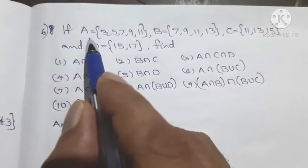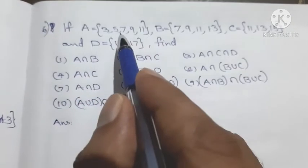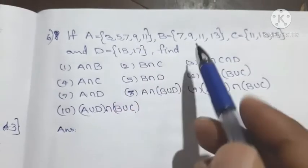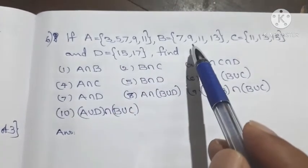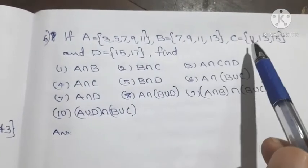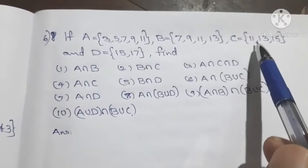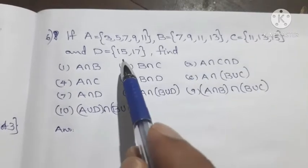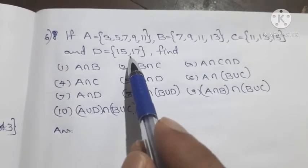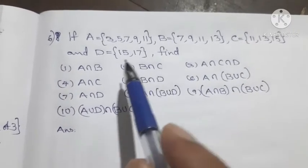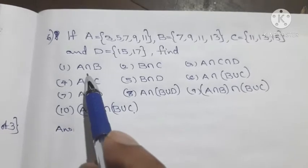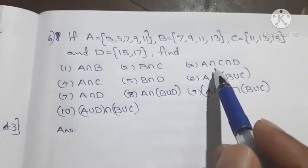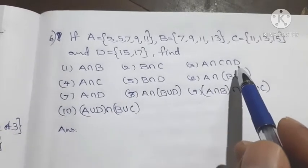A equals set {3, 5, 7, 8, 11}, B equals set {7, 8, 11, 13}, C equals set {11, 13, 15}, and D equals set {15, 17}. Find A intersection B, B intersection C, and A intersection C intersection D.